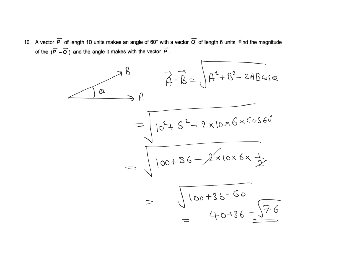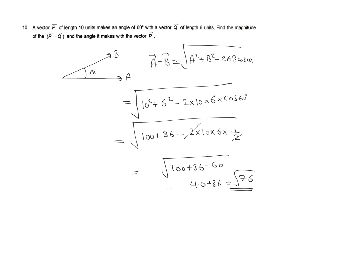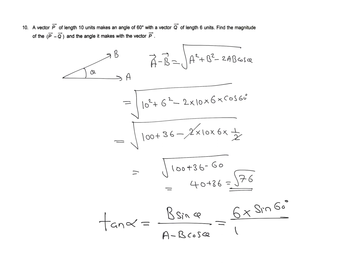To find the angle that the resultant vector makes with p vector, we use the equation: tan alpha equals b sin theta divided by a minus b cos theta. Here, b is 6, sin theta is sin 60, a is 10, and we subtract 6 into cos 60.